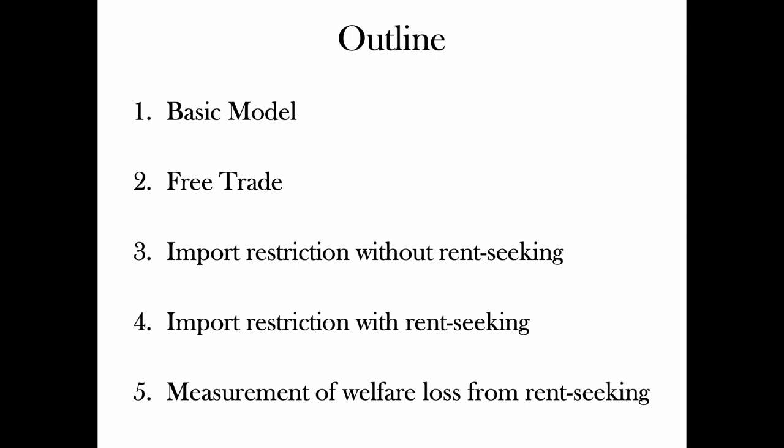Krueger's paper divided her model into five portions: first the basic situation — the basic model; then what happens in free trade; then what happens in import restriction without rent seeking; then import restriction with rent seeking; and finally she measures the welfare loss from rent seeking, though we will probably skip that last part.